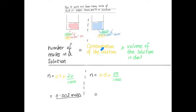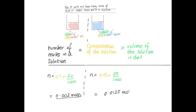The same for the sodium hydroxide: the concentration of the solution is 0.5 moles per decimeter cubed, and the volume of the solution in decimeters cubed is 25 divided by a thousand. Putting 0.5 times 25 divided by a thousand into a calculator gives an answer of 0.0125 moles. This means that in 25 centimeters cubed of 0.5 moles per decimeter cubed sodium hydroxide, there are 0.0125 moles of sodium hydroxide.